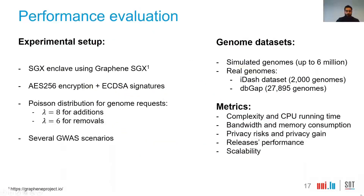Now let's talk about the performance evaluation of our solution. We used Graphene-SGX to implement our protocol inside an SGX enclave, and we used AES 256-bit encryption with an ECDSA signature scheme. We assumed different values following a Poisson distribution for generating genome requests from biocenters, and considered a variety of GWAS scenarios. We used simulated genomes up to 6 million, and also real genomes — the HapMap dataset with 2,000 genomes and the dbGAP dataset with approximately 28,000 genomes. We evaluated metrics including algorithm complexity, CPU runtime, bandwidth, memory consumption, privacy risk, privacy gain, release performance, and scalability.